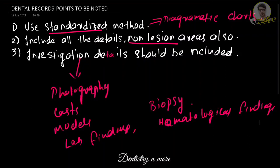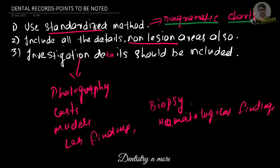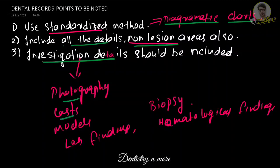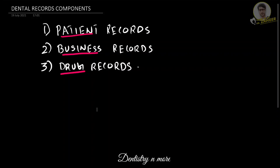Next, there are important points to note when taking dental records. We need to use a standardized method, such as diagrammatic charts. We should not use any non-standardized method for taking case history. We need a good standardized method for every patient, and we should always include most of the details, covering all relevant areas. Investigation details should also be properly recorded, including photography, cast models, lab findings, biopsy, and hematological findings.